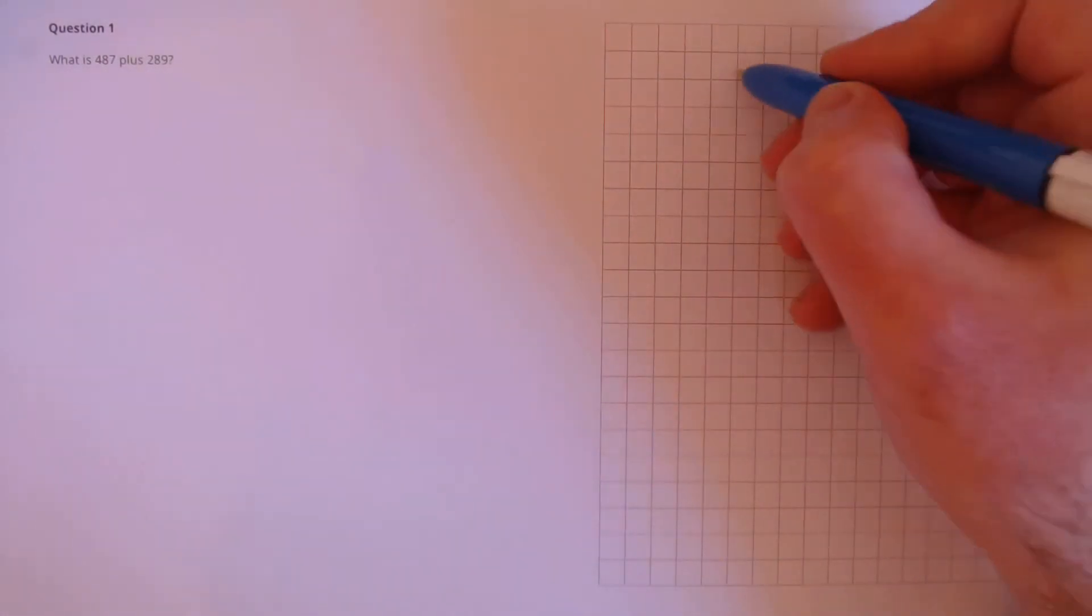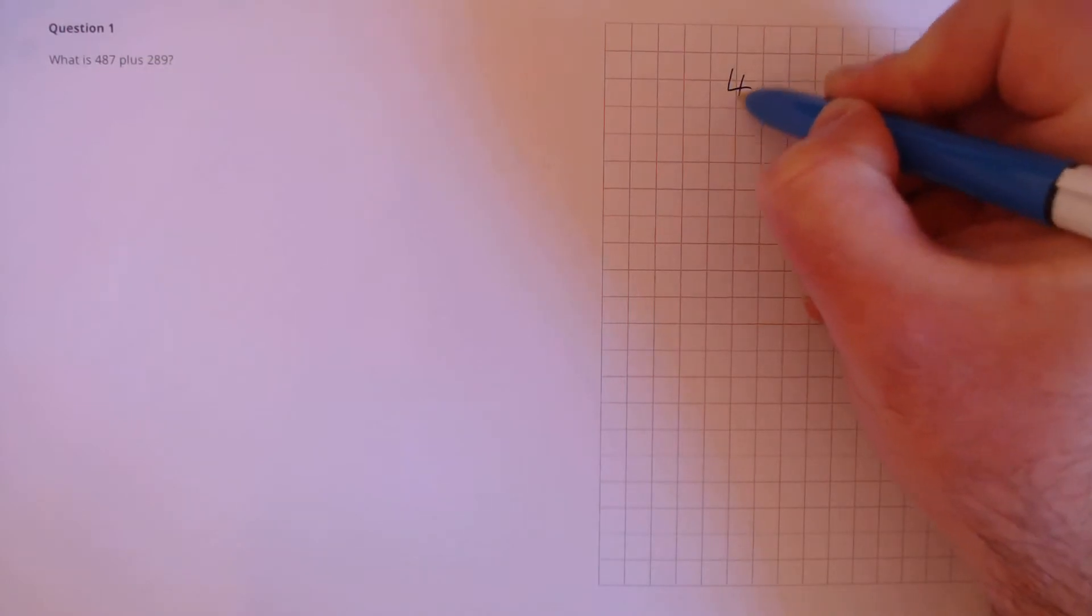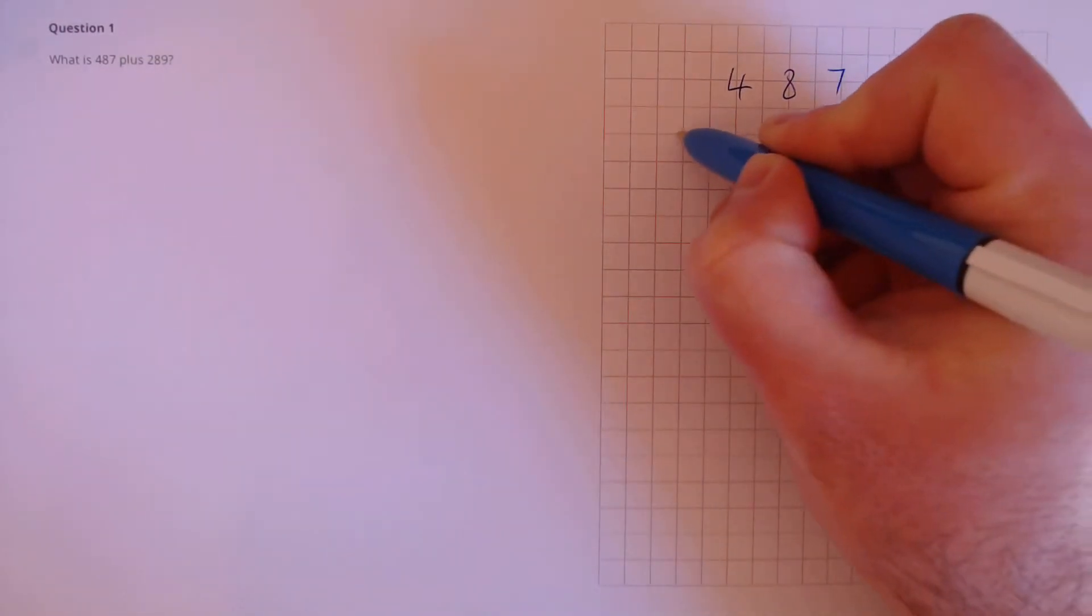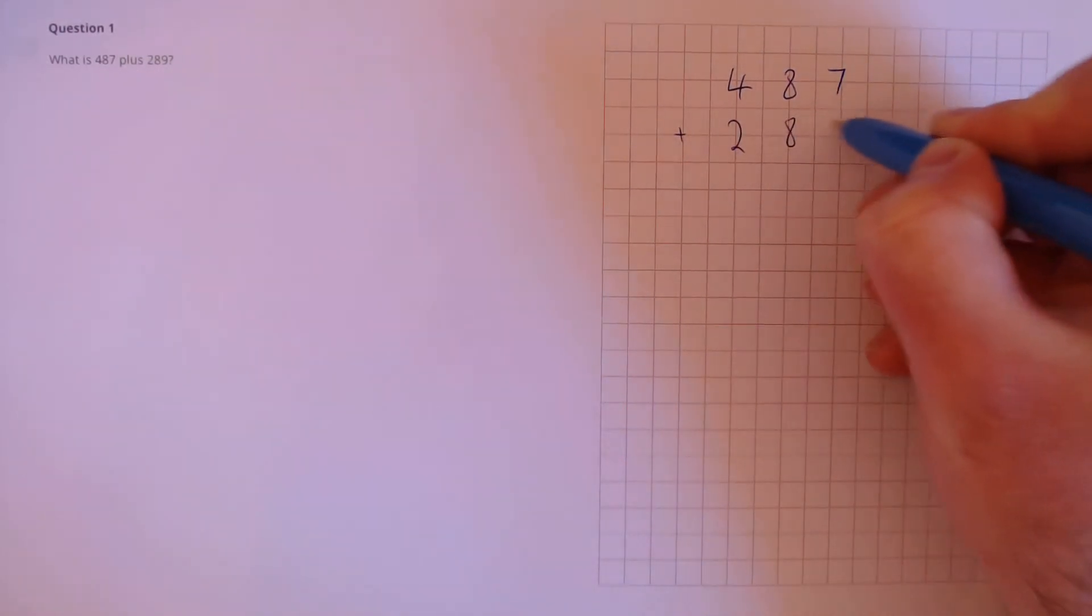Question 1. What is 487 plus 289? We need to use column addition for this. 487 plus 289.